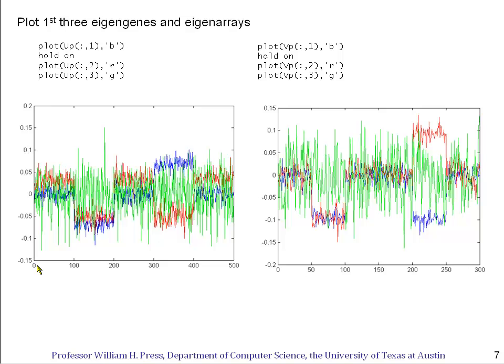So here I've plotted for the toy example the first three eigengenes on the left and eigenarrays on the right. Let's start with the third one. The third one is just part of those random noise principal components, and therefore it's the green function which has no particular structure through it, either along the 500 genes in the U matrix or along the 300 columns of the V matrix. The first two, however, the blue and the red, definitely do show the structure of the main effects we put in.